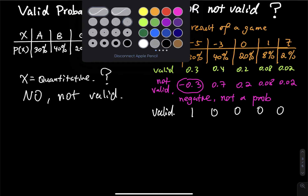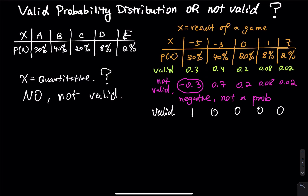What if the probability of getting a negative three is 2? A value of 2 is equivalent to 200%. Can we have 200% as a probability? The answer is no — 200% is more than 100%, so that is not a valid probability.